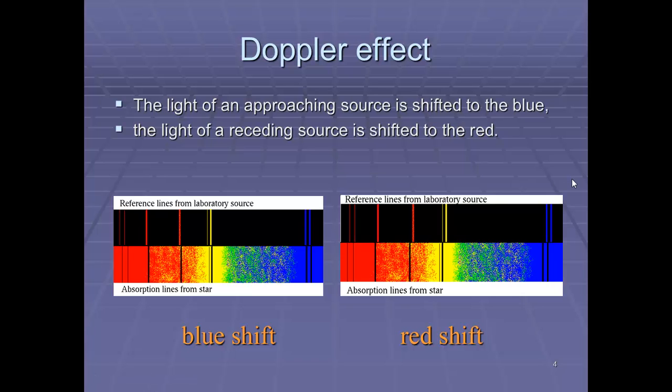And we normally recognize this by looking at reference lines from specific electron shell transitions compared to the absorption lines from a star. So we can see blue shift and we can see red shift using this comparison of absorption lines and emission spectrum.